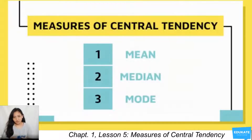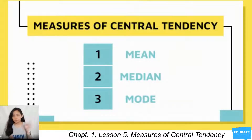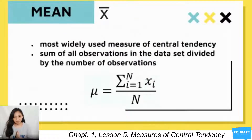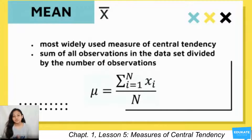One way to describe data is by using its measures of central tendency. There are three — you're familiar with these already: mean, median, and mode. Mean is denoted by the symbol x-bar. It is the most widely used measure of central tendency, meaning it's the most common. Your mean is the sum of all observations in the data set divided by the number of observations.